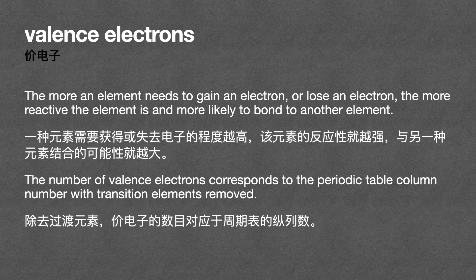The more an element needs to gain or lose an electron, the more reactive the element is, and the more likely it is to bond to another element. The number of valence electrons corresponds to the periodic table column number, with transition elements removed.